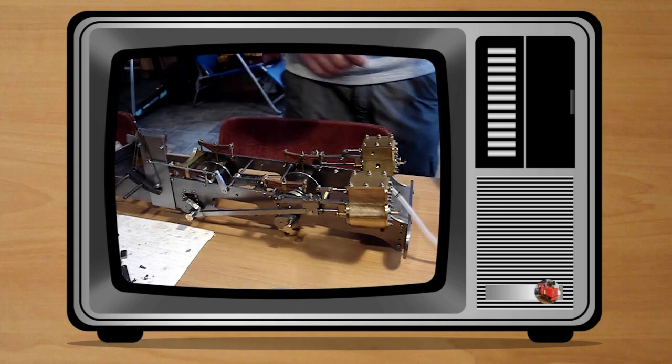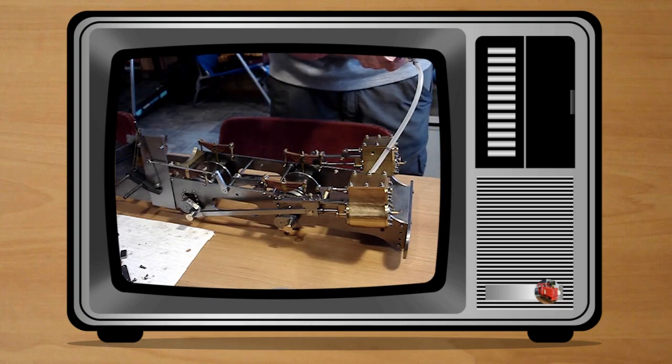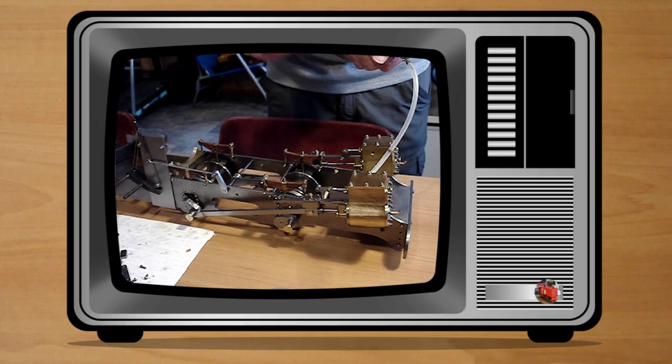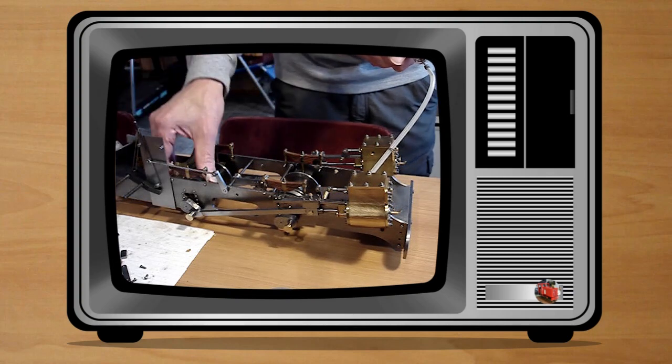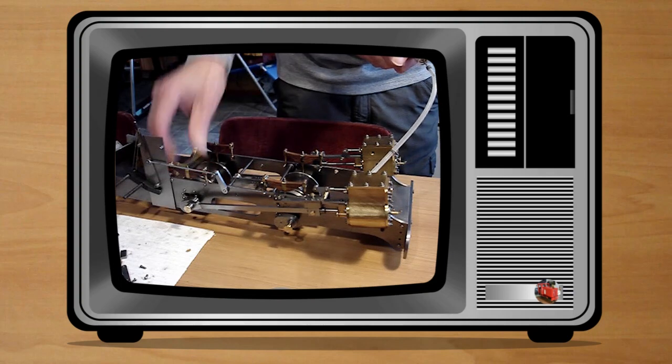Welcome to the live steam build of Charles, the Penrhyn quarry engine. This is being built to 1/12th scale to run on gauge 1 or G gauge 45mm gauge track.